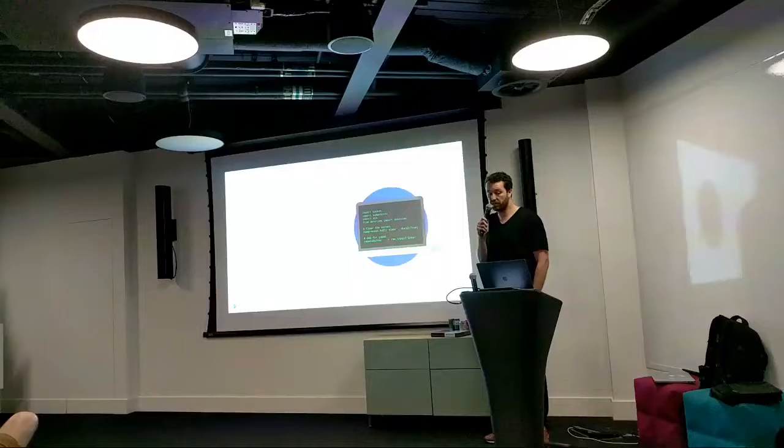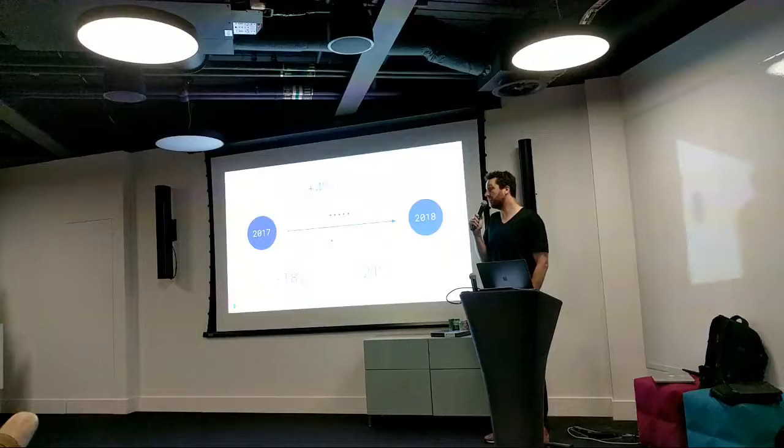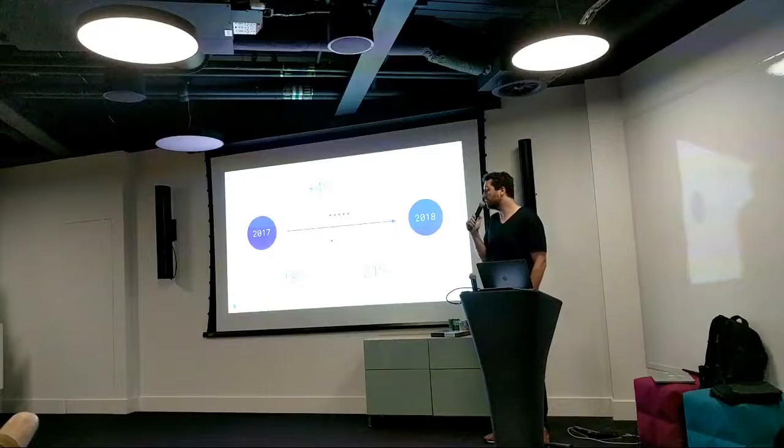We've seen major improvements in the quality of apps. This is showing the number of mentions that users have in reviews for specific issues over the past year. It's gone up 4% for speed, design, and usability, and down close to 20% for stability bugs and resource issues including battery, memory, etc.